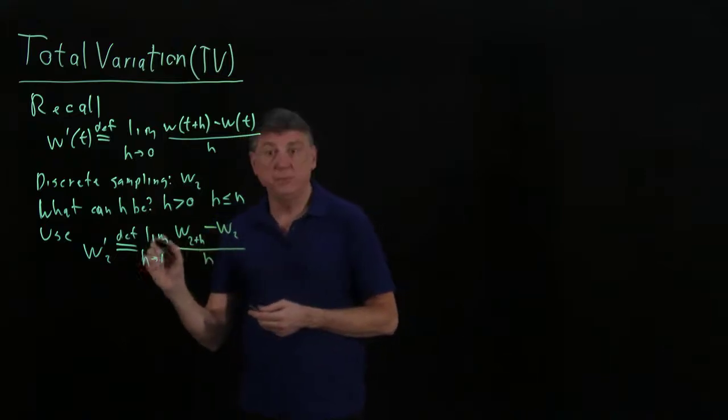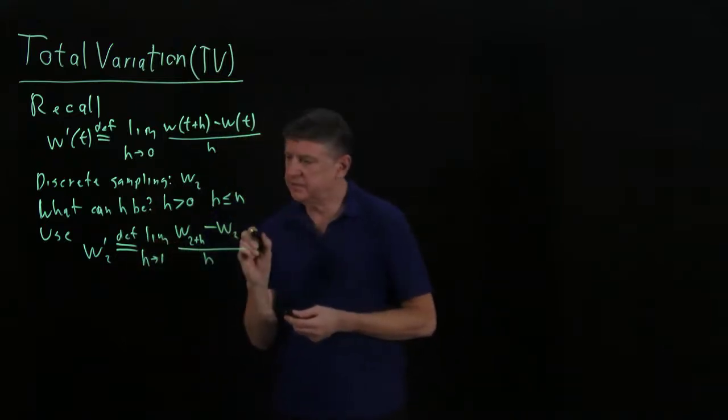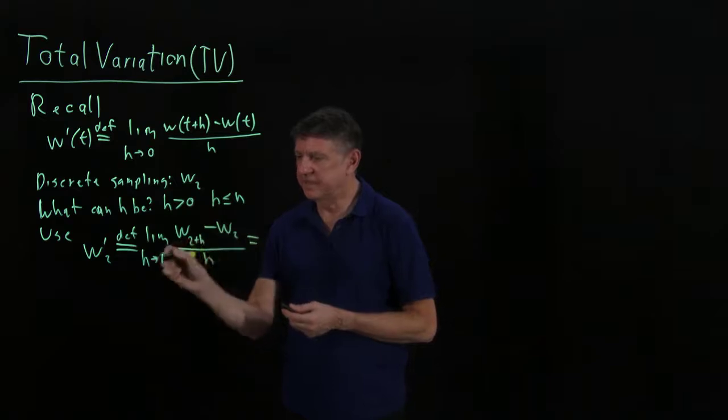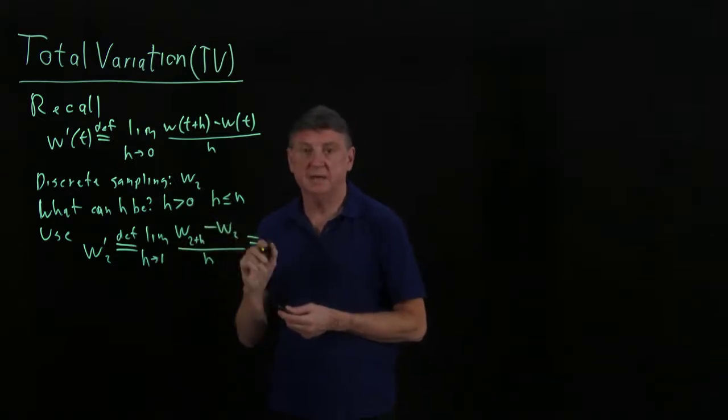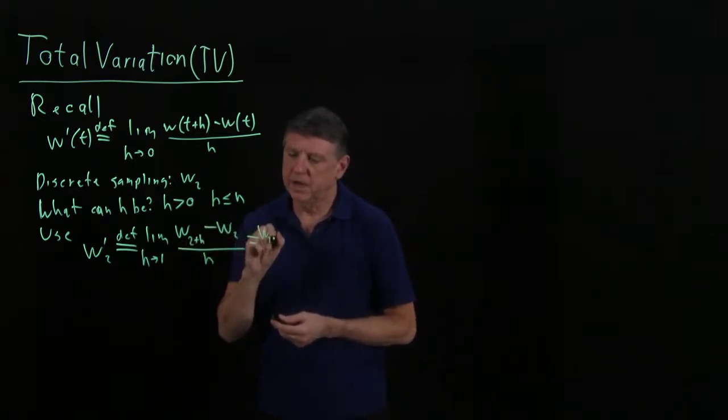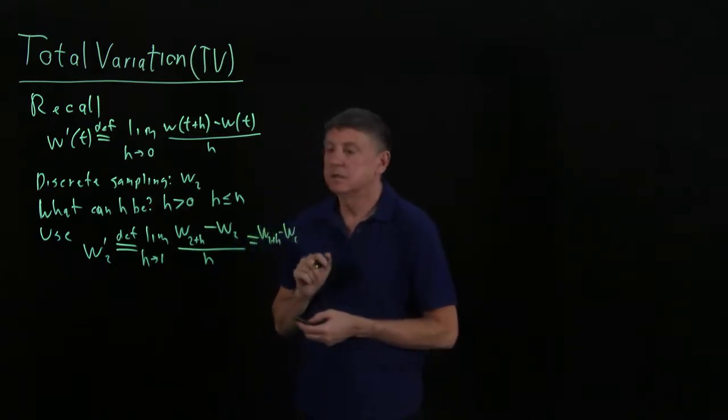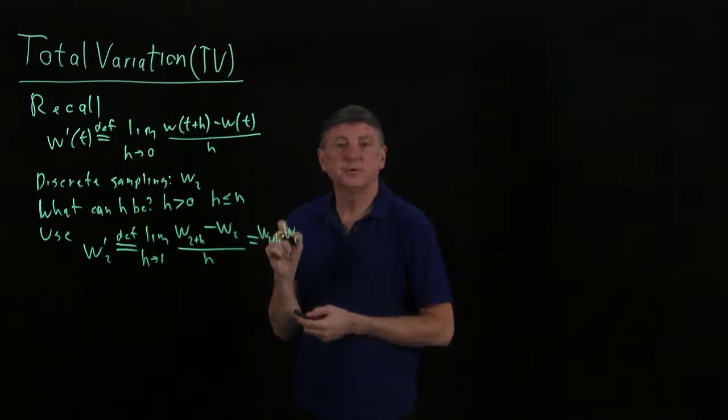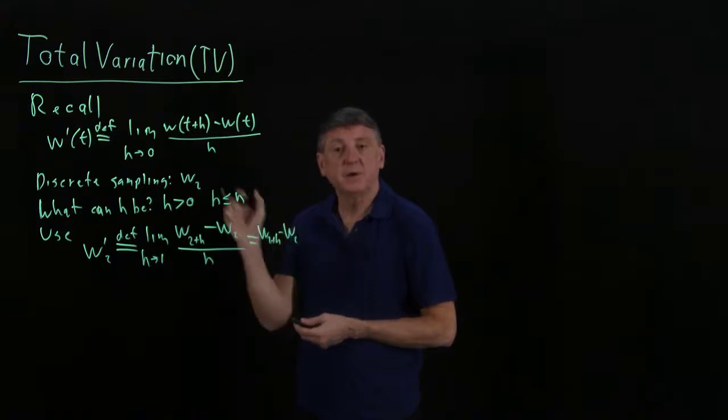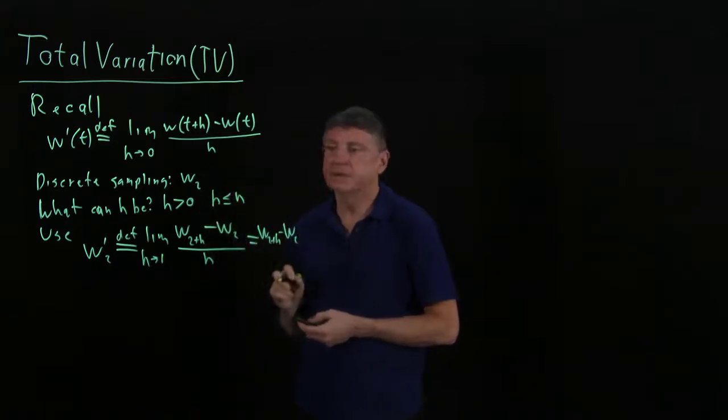And then that very plainly has to equal the limit of this as h goes to one is just that, so wi plus h minus wi. And this is sometimes referred to as the forward difference. That is, we take the forward value minus the current value, and we'll take that as the derivative. So this is often simply defined, but we can reason it out by using some fairly elementary logic.